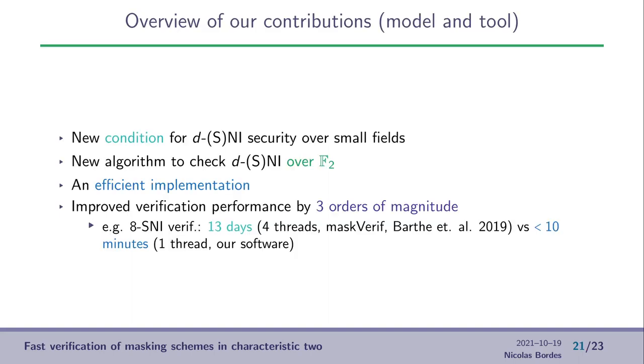As a result of our contributions, we have a new condition for the d-NI and also the d-SNI security over small fields. We are not constrained by the size of the field. We also have a new algorithm to check the d-NI and d-SNI property that is valid over F2. And this algorithm is implemented as a publicly available tool to check the security of gadgets. And this tool improved the verification performance by three orders of magnitude. For example, for a d-SNI verification, with the state-of-the-art tool, it took 13 days on four threads. And with our tool, it took less than 10 minutes on a single thread.